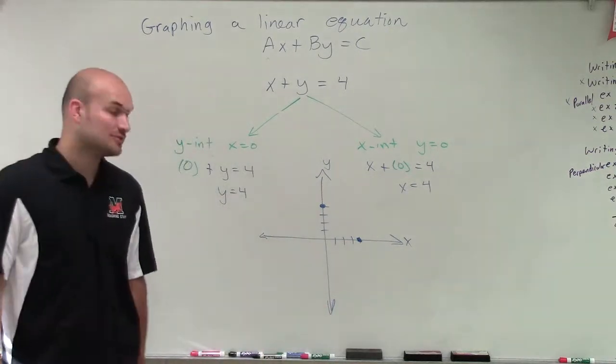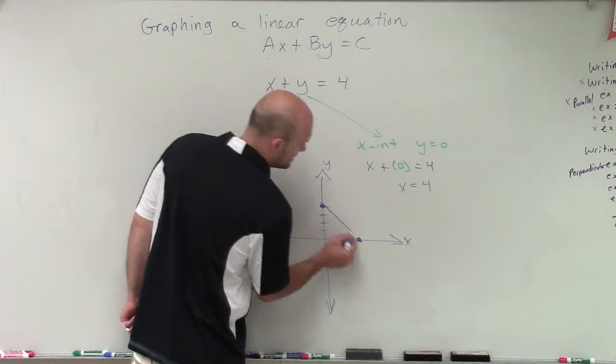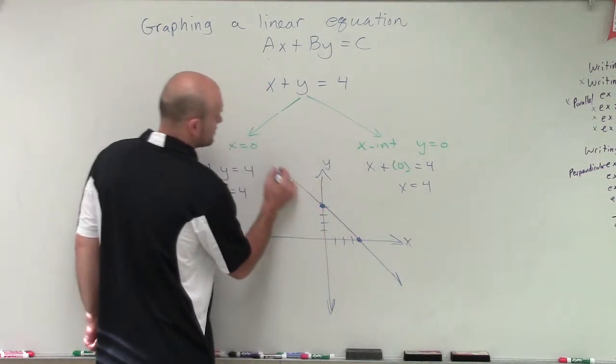Therefore, now I've labeled what the x and the y-intercept are. And now all I need is two points to graph a line. So I'll connect and graph.